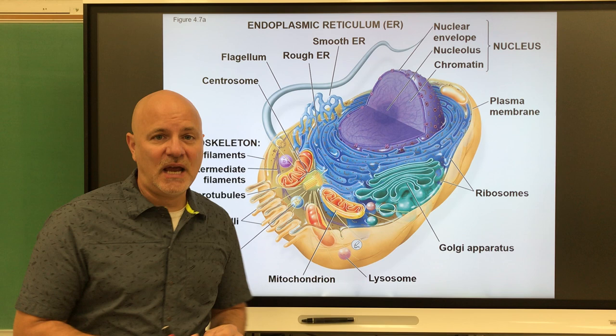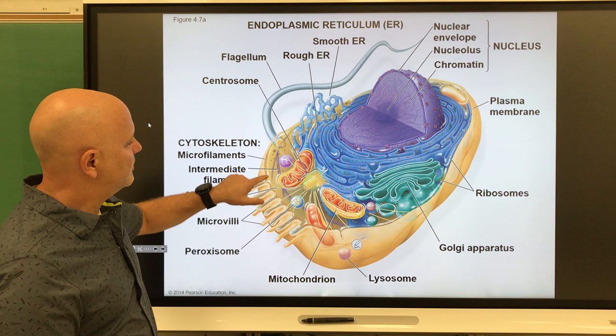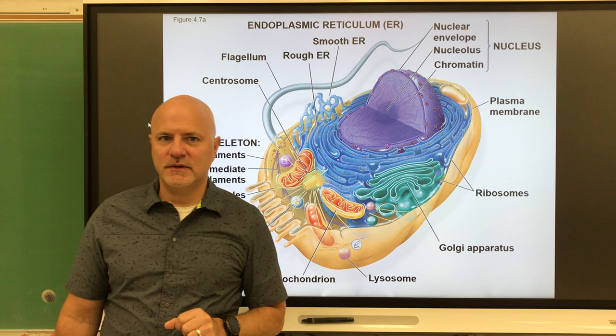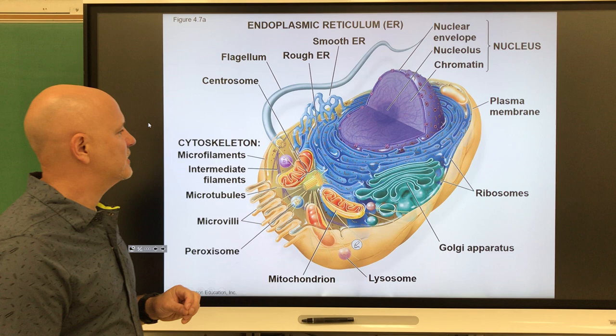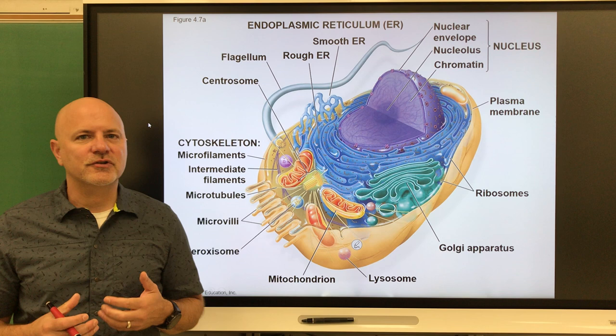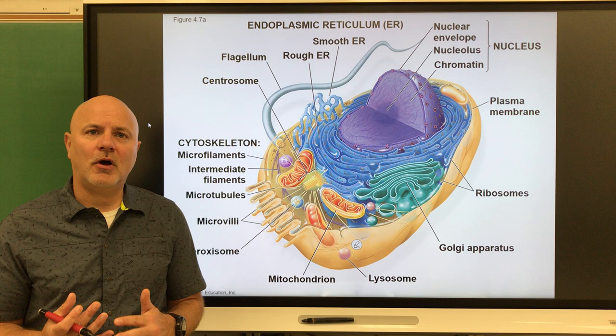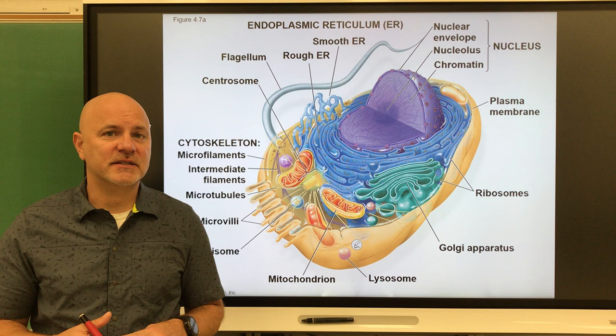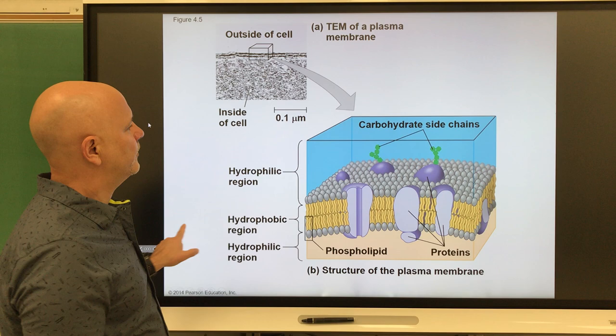All cells metabolize. All cells have cytoplasm — a gel-like fluid in between cell structures that suspends them. And all cells have ribosomes — those little dots you see on the structures — which are structures that synthesize proteins. So the five features all cells share are: a plasma membrane, DNA, metabolism, cytoplasm, and ribosomes.